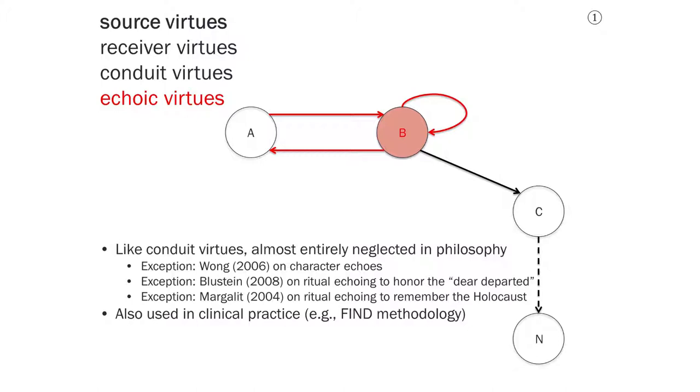David Wong, a philosopher at Duke University, has written about character echoes. He has the idea that when I tell you what I think and what I care about and what I value, you might echo that back to me in a slightly distorted and perhaps even idealized way in order to help me crystallize what I really care about, in order to help me find out what sort of person I really am. And he thinks of this as a process that mostly is just true to what the source originally reports, to what A says to B, but which might involve a certain amount of benevolent or charitable distortion.